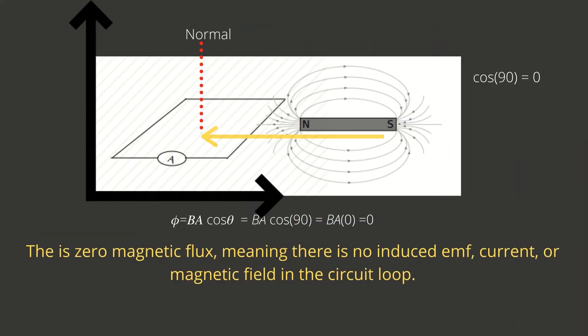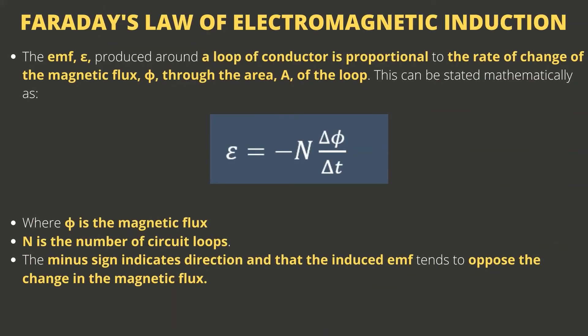We can also consider a situation where both the magnetic field and the loop of wire lie along the x-axis. Now the angle between the normal to the loop and the magnetic field vector is 90 degrees — they are perpendicular to each other. Since the cosine of 90° is zero, we would have zero magnetic flux in this scenario. This means that if the magnetic field and the wire loop are parallel to each other, there would be no induced current in the loop.